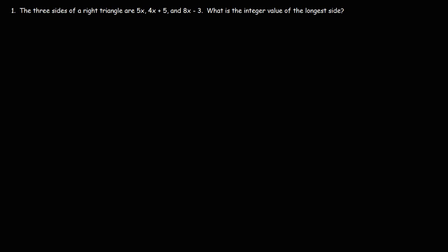The three sides of a right triangle are 5x, 4x plus 5, and 8x minus 3. What is the integer value of the longest side?